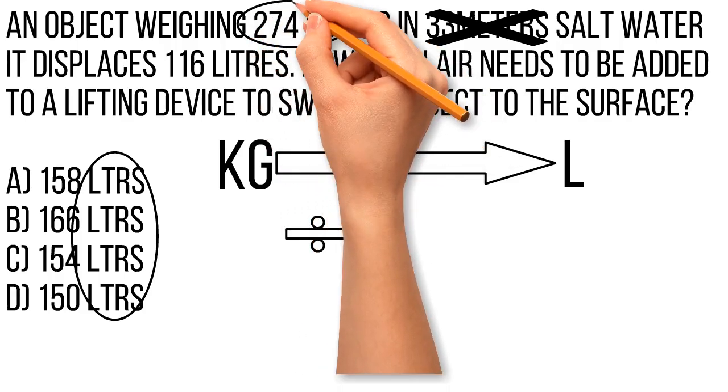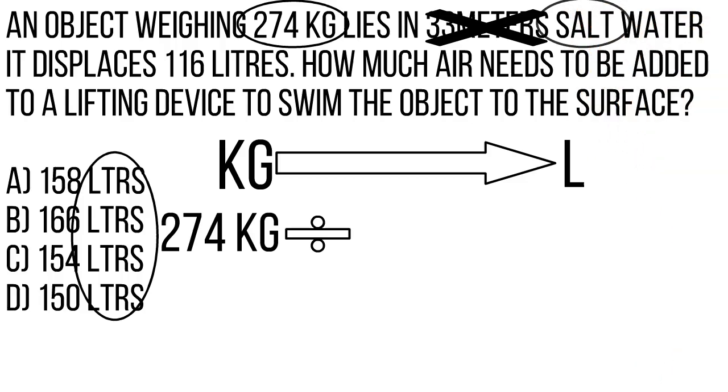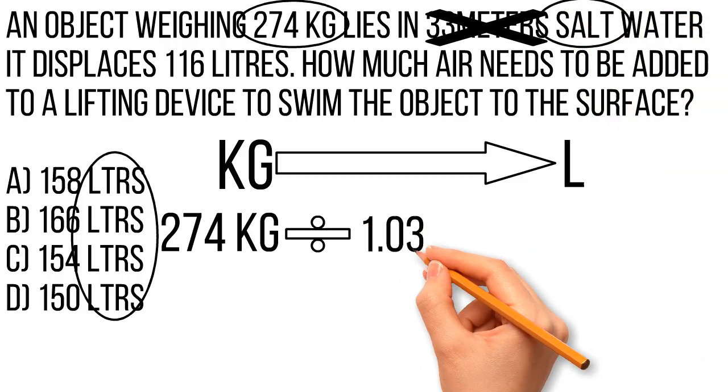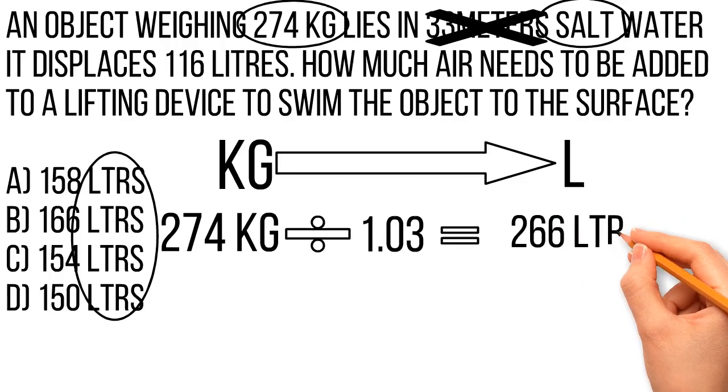So we'll take our 274 kilograms and we will divide by what? Salt water constant, 1.03. 274 divided by 1.03 is 266 liters.